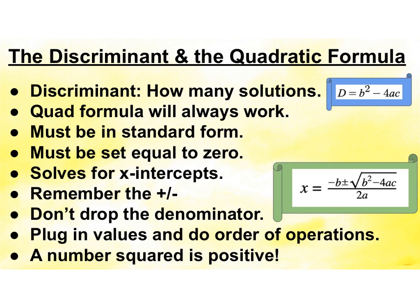To recap: the discriminant and the quadratic formula should both be in your notes. The discriminant tells us how many solutions; the quadratic formula solves for them. The quadratic formula will always work, but it must be in standard form set to 0. It solves for your x-intercepts — remember your plus or minus, don't drop the denominator, plug in your values, do order of operations, and remember b squared is always positive. Nice work.